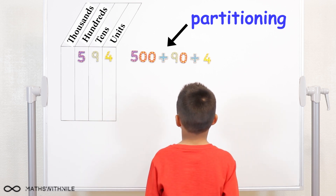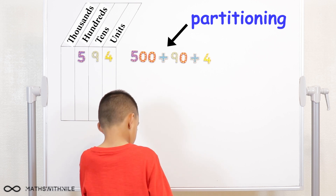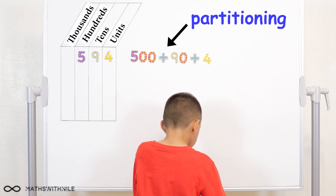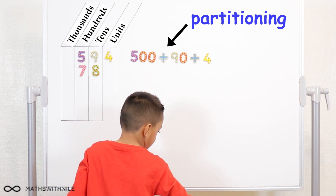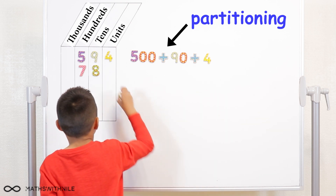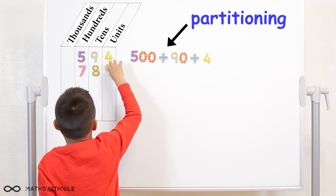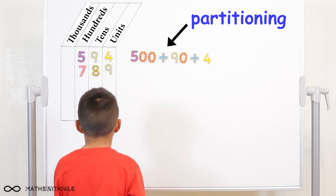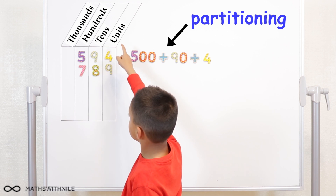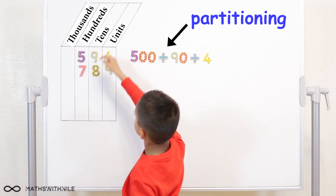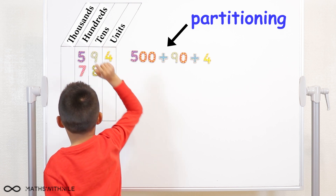So I want you to put the number seven hundred and eighty-nine. So can you, before you do anything else, can you tell me the value of each of those digits? Nine units, eight tens, and seven hundredths.